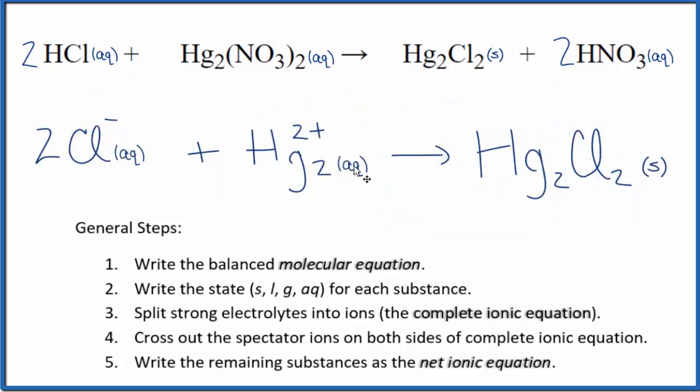So this is our balanced net ionic equation for HCl plus Hg₂(NO₃)₂. If you look at the charges here, we have two times one minus, that's two minus and two plus gives us a net charge of zero. Over here, this is a neutral compound, so net charge of zero. So the charge is balanced. And if you count the atoms up, you'll see they're balanced too.